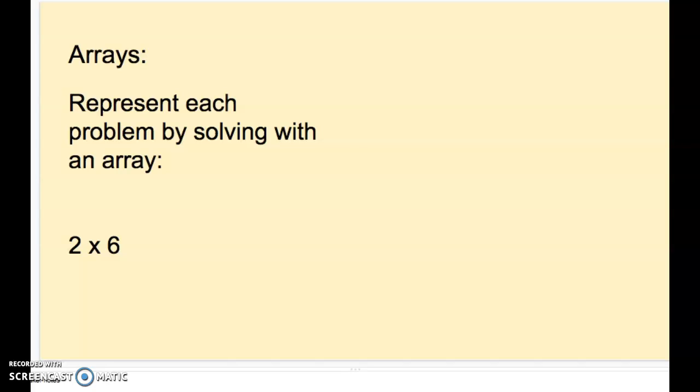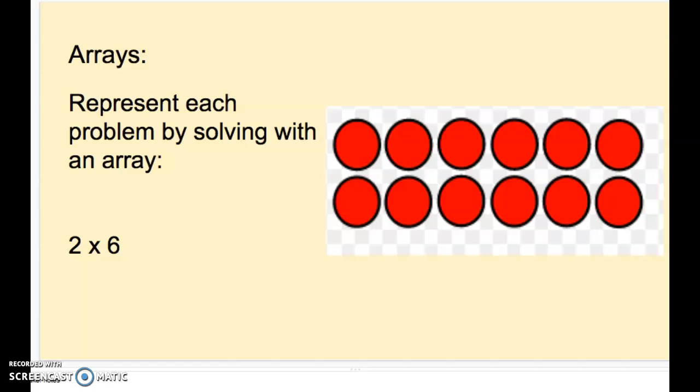All right, fourth graders. So I know that a two by six array means two rows and six columns. So I should have created something like this. Two rows, six columns. When I put that all together, two times six equals 12. Nice job.